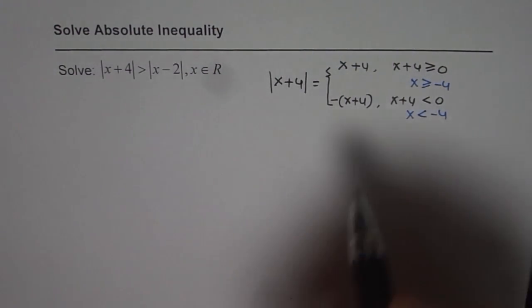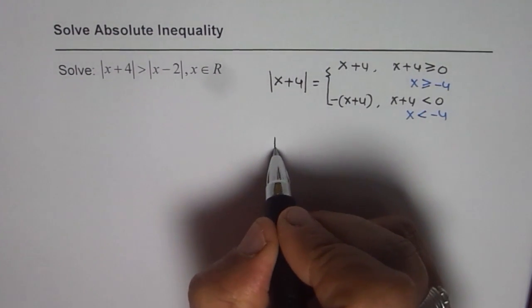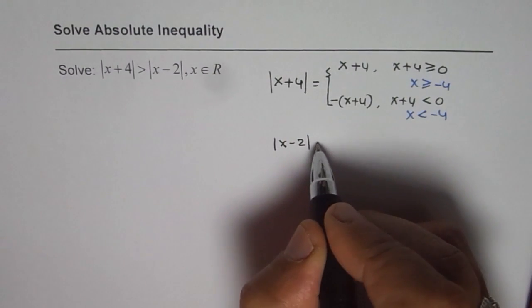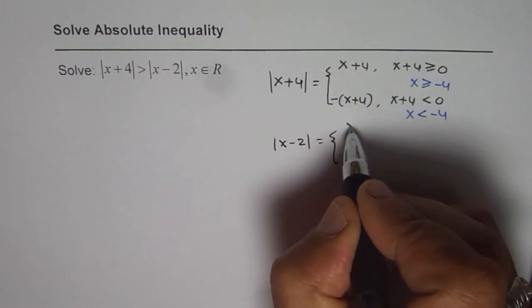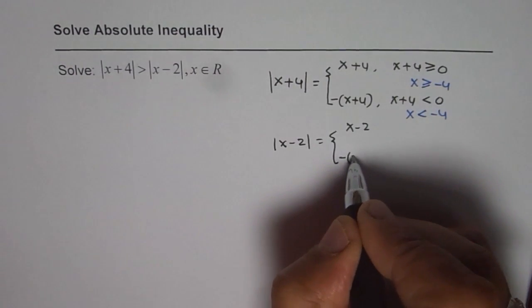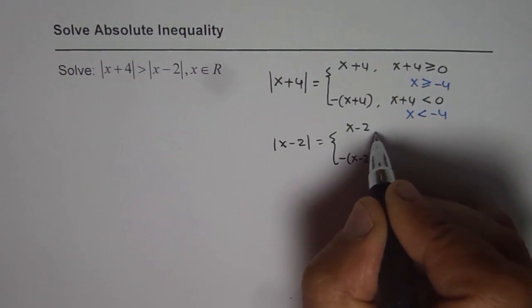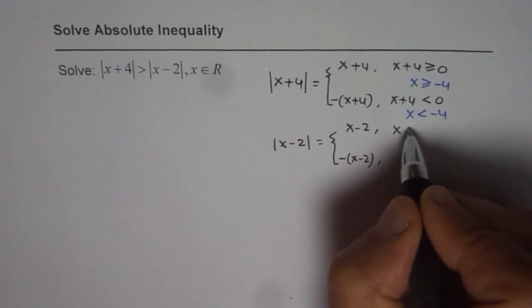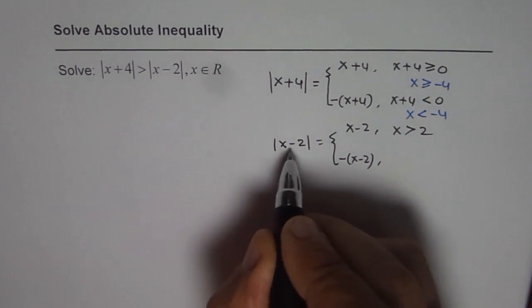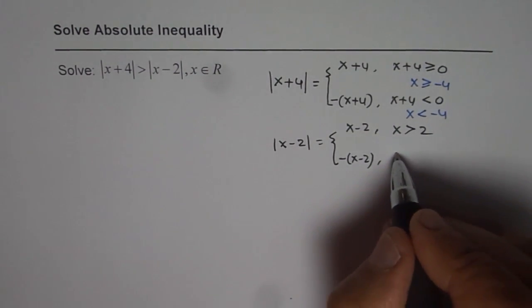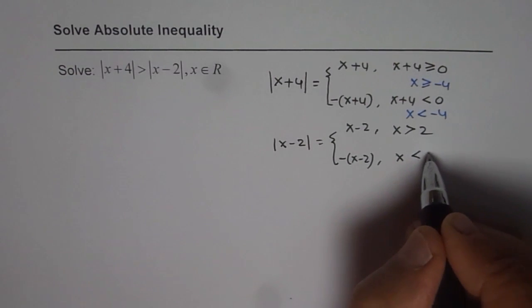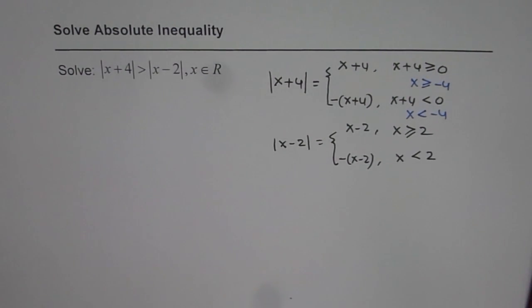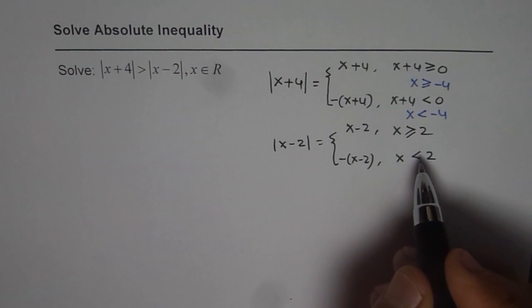For the absolute value of x minus 2, it can be written as x minus 2 when x is greater than or equal to 2, since 2 makes it zero, and as negative of x minus 2 when x is less than 2. That is how you rewrite each absolute function as a piecewise linear expression.